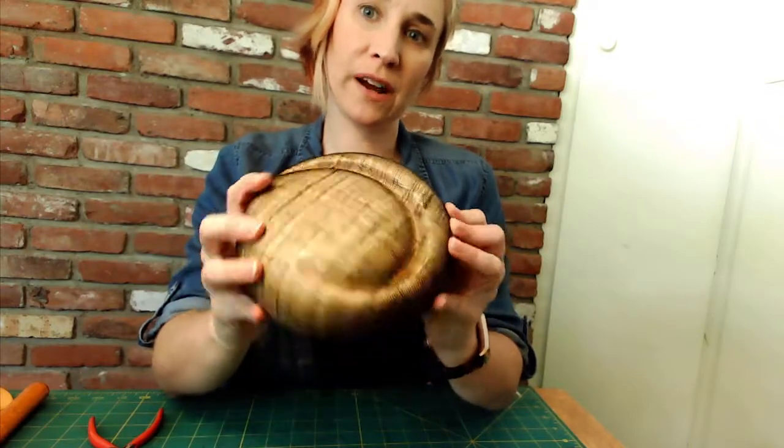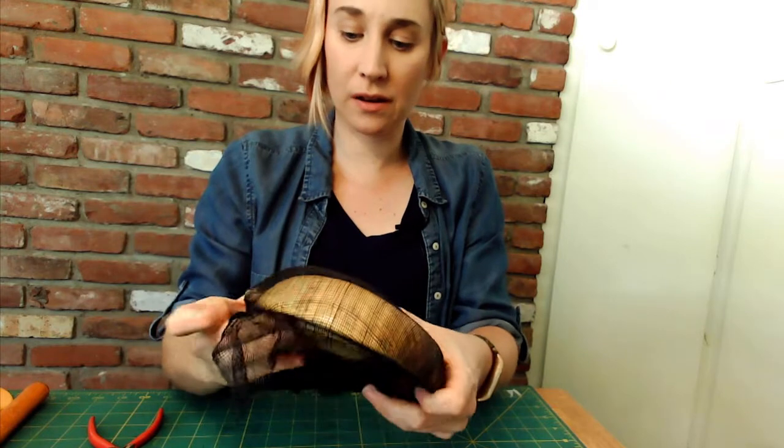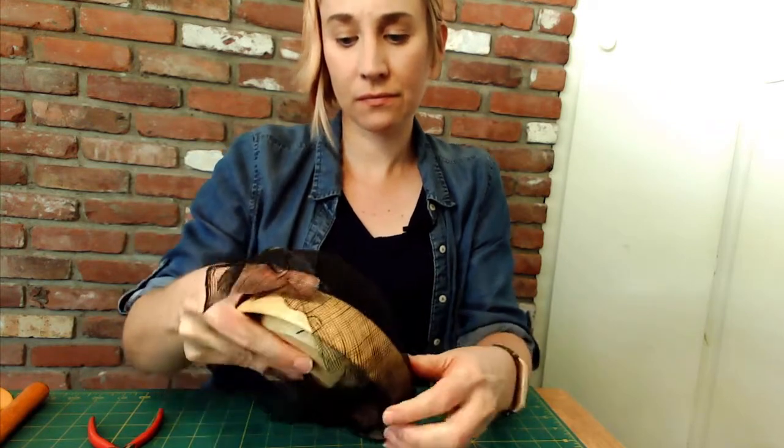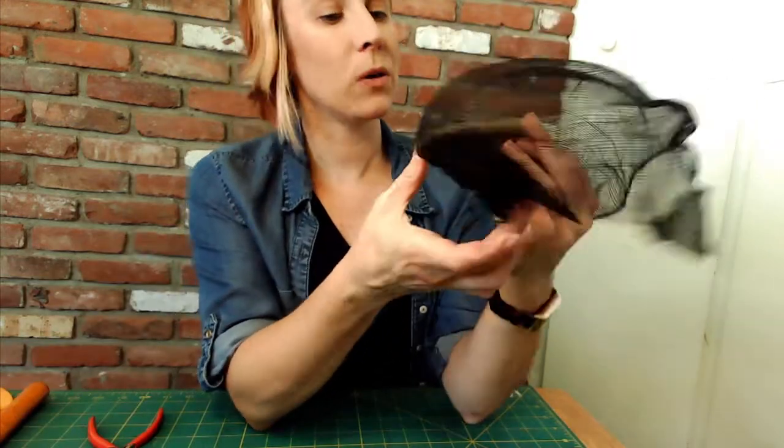So the pushpins are out, and I'll just peel the sinamay off of the hat block. And it holds its shape. I know it's transparent, so it's hard to see, but it holds its shape nicely.